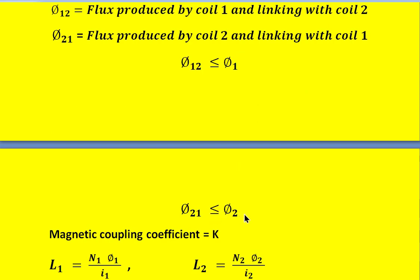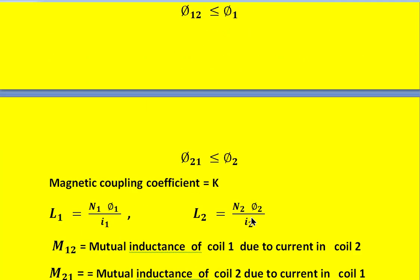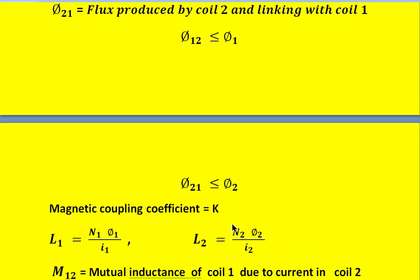Similarly, phi21 is always less than or equal to phi2. There is another term called the magnetic coupling coefficient. This magnetic coupling coefficient indicates how closely the coils are coupled with each other. If the coils are very close to each other, the value of k becomes 1, which indicates there is no leakage flux — whatever flux is produced in one coil, the whole flux also links with the other coupled coil.